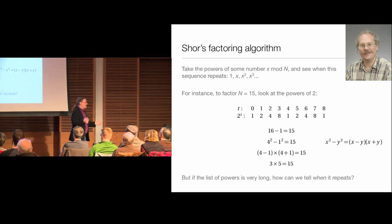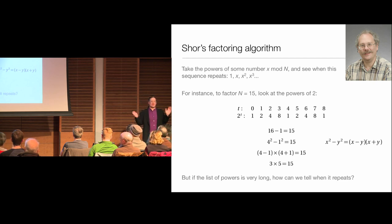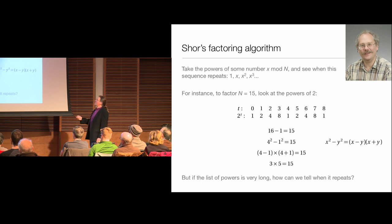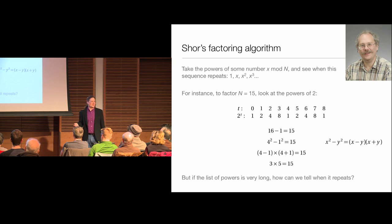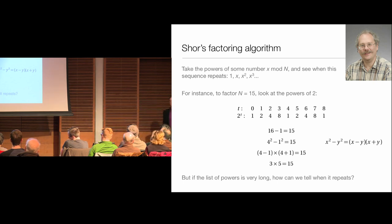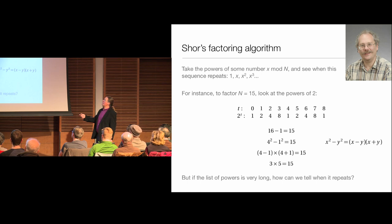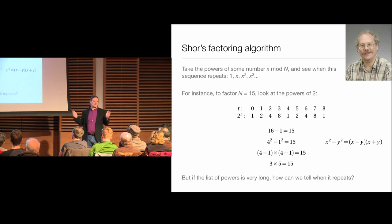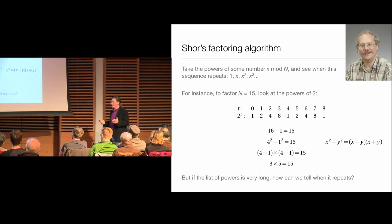You might think: why don't I just do this and read all the credit cards I want? The problem is that this list of powers could go on for a very long time before it repeats. If you just write down powers and wait to see when it comes back to 1, it could take an astronomical amount of time. If the number you're taking mod is a thousand digits long, you could end up counting up to something in the neighborhood of N or square root of N, which would take too much time.